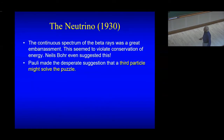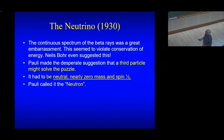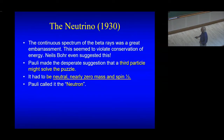Pauli was a very young man at that time. In 1930, he made a desperate suggestion that this situation can be salvaged if a third particle is also emitted — a third particle which you cannot detect. Pauli knew that that particle had to be neutral, it had to have very nearly zero mass, and it had to have spin one-half times Planck's constant. Pauli called it the neutron because it was electrically neutral.